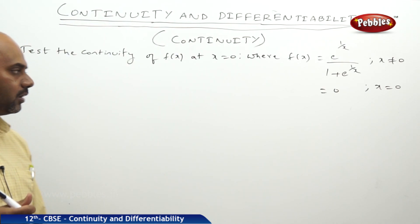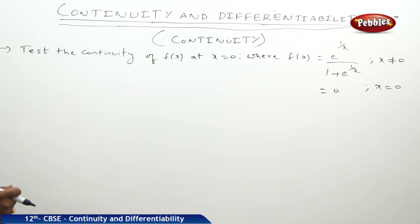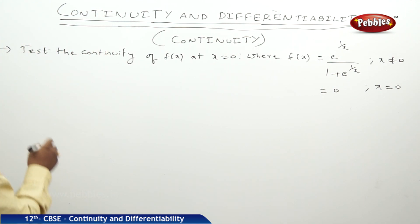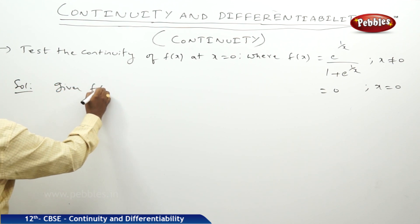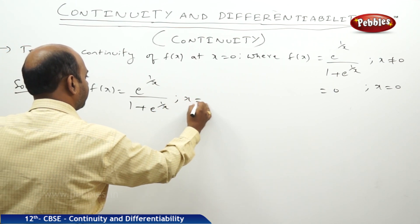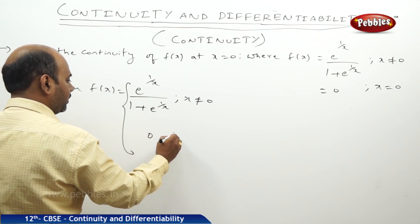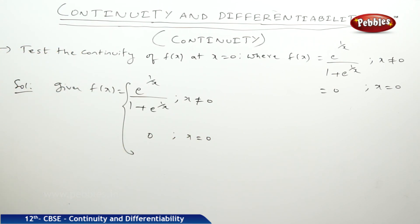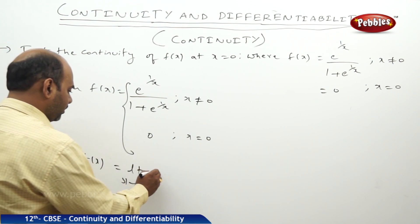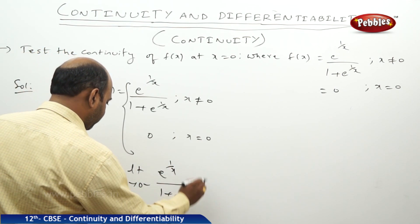Now we start our problems. A problem is given: test the continuity of the function f(x) at x = 0, where f(x) = e^(1/x) / (1 + e^(1/x)) when x ≠ 0, and f(0) = 0 when x = 0. First, I will find the left-hand limit at x = 0, denoted by limit x→0⁻ f(x), which gives limit x→0⁻ of e^(1/x) / (1 + e^(1/x)).